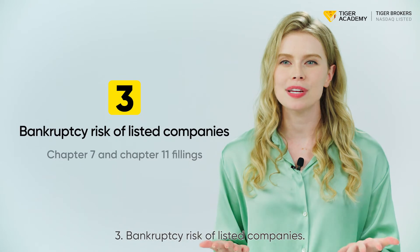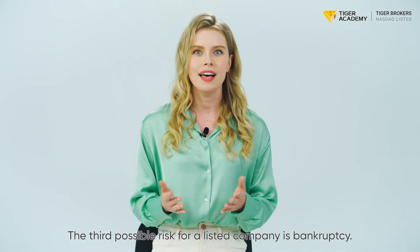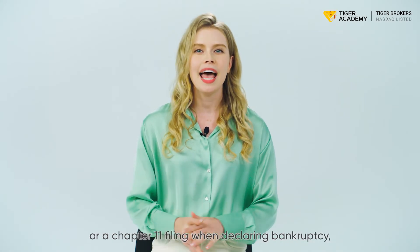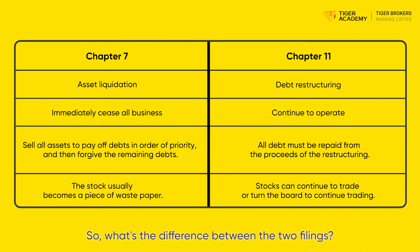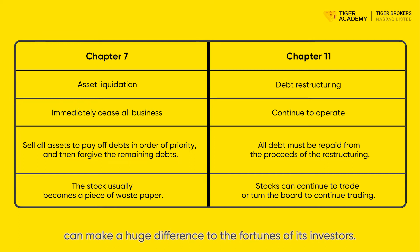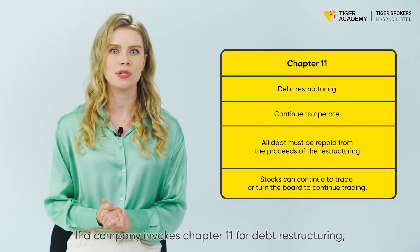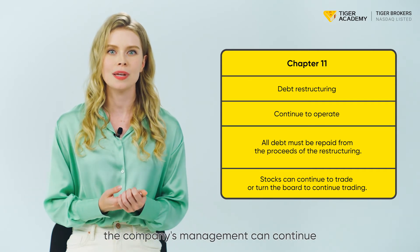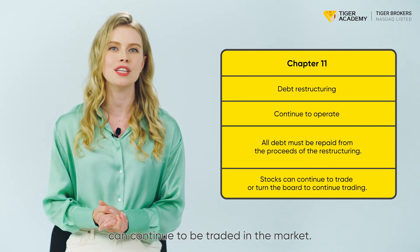Number three: bankruptcy risk of listed companies. The third possible risk for a listed company is bankruptcy. A company may choose a Chapter 7 or a Chapter 11 filing when declaring bankruptcy, as provided for in the US Bankruptcy Code. Which chapter a company chooses to file under can make a huge difference to the fortunes of its investors. If a company invokes Chapter 11 for a debt restructuring, the bankrupt company can continue to operate as usual, the company's management can continue to be responsible for its daily business, and its stocks and bonds can continue to be traded in the market.